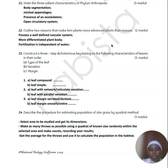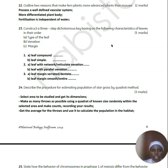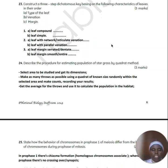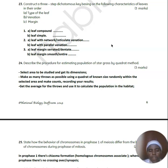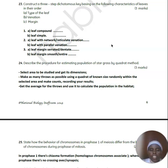Two reasons that make ferns more advanced than mosses: they have a well-developed vascular system, a more differentiated body, and fertilisation is independent of water. To construct a three-step dichotomous key based on leaf characteristics — type of leaf, venation, and margin — you can start with simple leaf versus compound leaf, then parallel venation versus reticulate venation, and then serrated versus smooth margin. A dichotomous key shows varied characteristics used to classify different types of organisms.